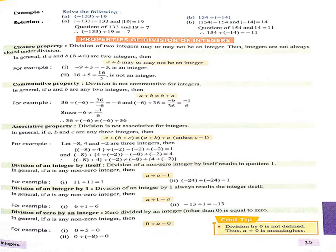यहाँ पर आपको एक cool tip दी हुई है। Division by 0 is not defined. Thus, A divided by 0 is meaningless. We can't divide any integer by 0 — in this situation we say 'not defined'. अगर हम किसी भी digit को 0 से divide करेंगे तो उसका कोई meaning नहीं होगा। So division by 0 is not defined, because A divided by 0 is meaningless.